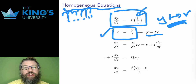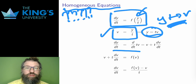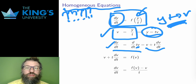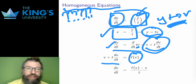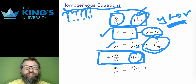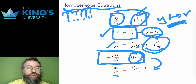So with y equals tv, I can differentiate both sides. The left derivative is dy/dt; the right, by the product rule, is v plus t dv/dt. If I replace the original dy/dt with v plus t dv/dt, and f(y/t) with f(v), I get a new differential equation for v. Solving for the derivative term and putting it in standard form, I get a separable equation. So this substitution changes any homogeneous equation into a separable equation.